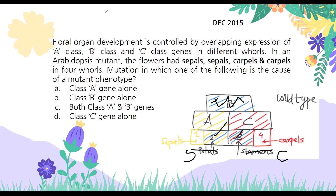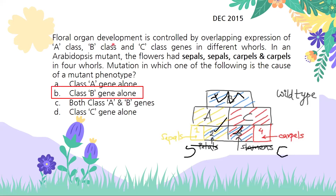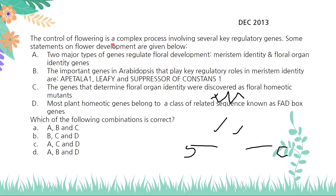When B is not present, you get the phenotype of sepals, sepals, carpels, carpels. So the answer is that the class B genes alone are mutated.